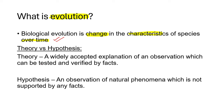There are other definitions you need to know: a theory versus a hypothesis. A theory is a widely accepted explanation of an observation which can be tested and verified by facts. For us to say there is a scientific theory, we need to test it and verify it using facts. For example, we say this is the theory of evolution because there are certain facts and evidences that have been used to prove that evolution took place. So it is verified by facts, whereas a hypothesis is just an observation of natural phenomena which is not supported or cannot be proved by any facts.